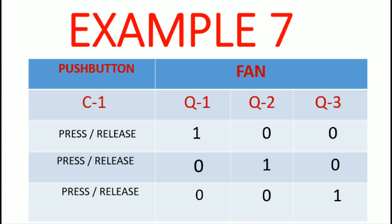Let me show you the boolean logic for example 7. We have a push button C1 and three fans Q1, Q2, and Q3. When I press and release C1 for the first time, only Q1 will be true — Q2 and Q3 will be false. When I press and release C1 for the second time, only Q2 will be true — Q1 and Q3 will be false. For the last press and release of C1, only Q3 will be true and Q1 and Q2 will be false.